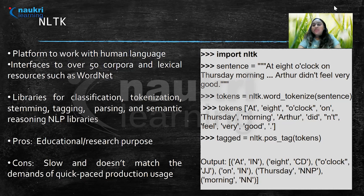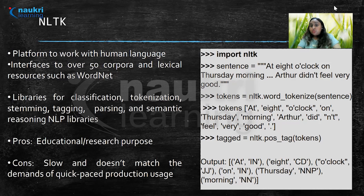Here's how we use NLTK: we just import NLTK in Python. For example, given the sentence 'At 8 o'clock on Thursday morning, Arthur didn't feel very good,' we use word_tokenize in NLTK and the sentence gets converted into tokens. Similarly, we can use NLTK for POS tagging — part of speech tagging — and all the tokens will be assigned their respective part of speech tags.